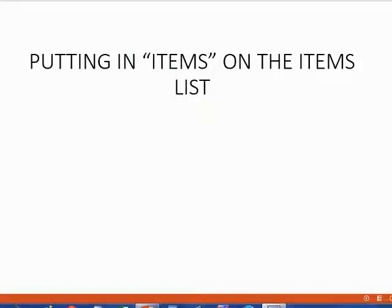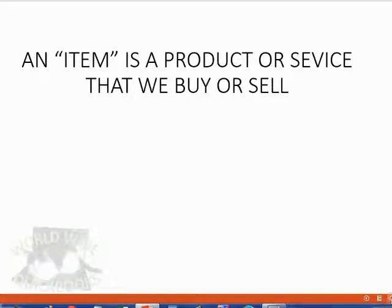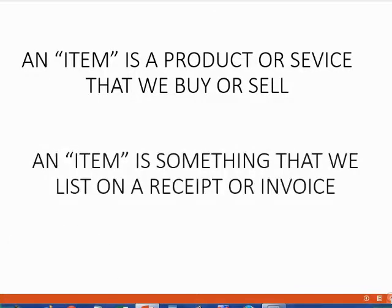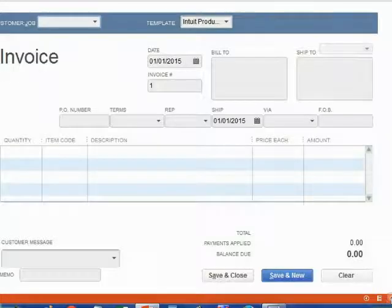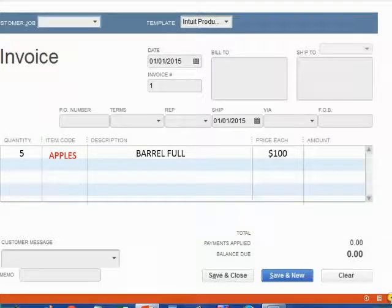We will now do the very last part of setting up a company file: putting in items on the items list. An item is a product or service that we buy or sell. Therefore, an item is something that we list on a receipt or an invoice. If we put the merchandise that we sell across the columns of the body of the invoice, then that merchandise is an item that belongs on the items list.